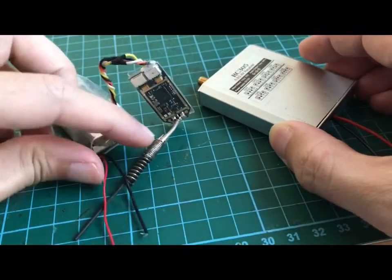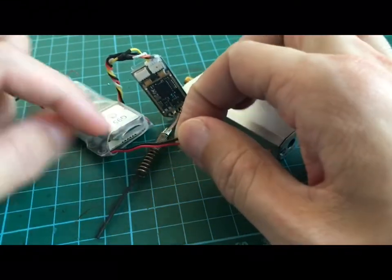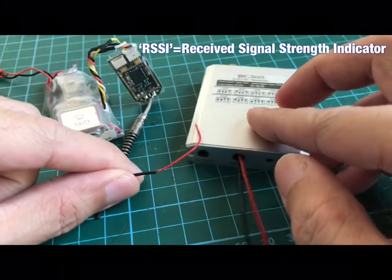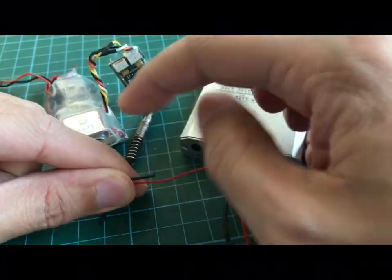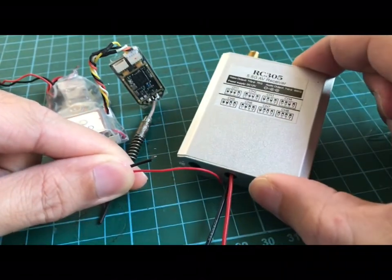What I'm going to do is hook up the voltage cables to the RSSI pin of the receiver. This way, instead of measuring the voltage of the battery, the APM is measuring the receive signal strength from this receiver.